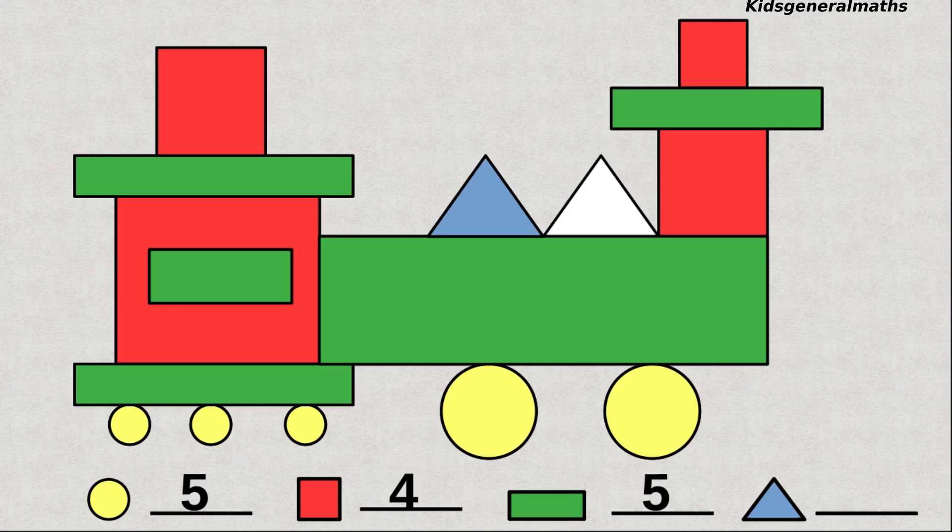Next triangles. 1, 2. How many triangles? 2 triangles.